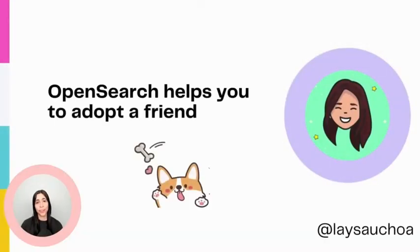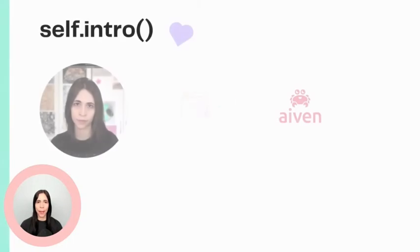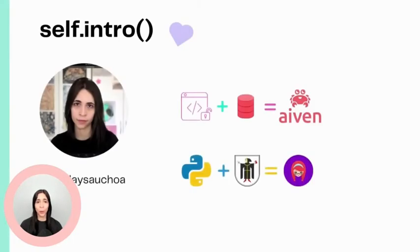Hello everyone. Today I will be explaining how OpenSearch can help us to adopt a friend, also known as PETS. My name is Lais Oshoa and I work for Aiven as a developer advocate, where we do our best to manage open source databases such as Kafka, OpenSearch, and others for everyone.